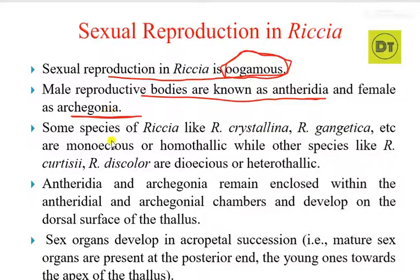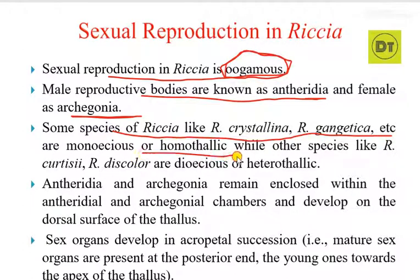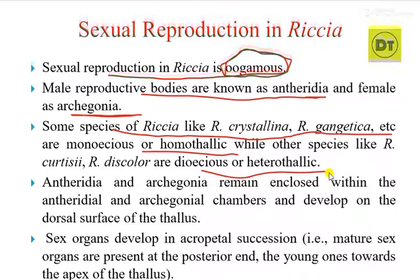Some species of Riccia, like Riccia crystallina and Riccia gangitica, are homothallic or monoecious. While some species like Riccia discolor are dioecious or heterothallic.